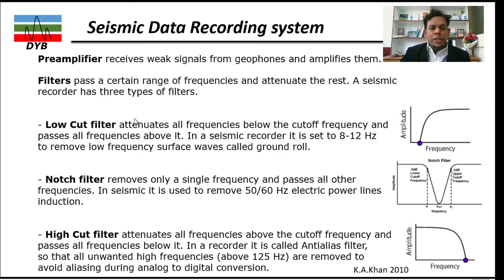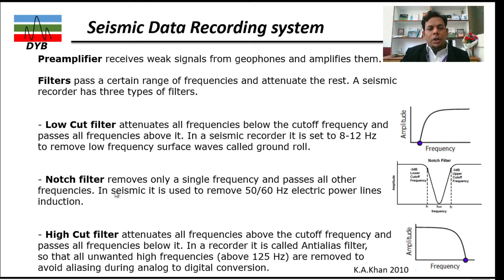Going into the detail of each component: the preamplifier receives the weak signals from the geophone and amplifies them. The low cut filter attenuates frequencies below the cutoff frequency and passes all frequencies above it — so for example, everything below a certain point is cut, and only the frequencies above that are kept in the data. The notch filter is a special filter used during land acquisition to remove the frequency of nearby electric power induction lines, which are typically at 50–60 Hz and get absorbed into our dataset. The high cut filter removes very high frequencies that are not needed for seismic data and which would cause an aliasing effect.